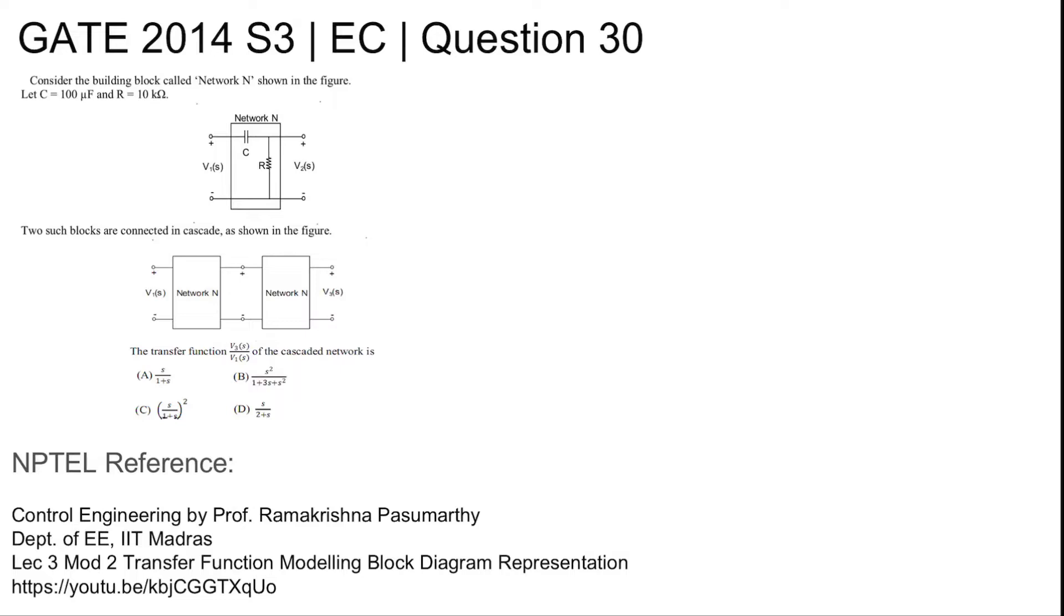GATE 2014 Set 3 EC Question Number 30. Consider the block called Network N shown in the figure, where C is 100 microfarad and R is 10 kilohm. Two such blocks are connected in cascaded fashion. The overall transfer function of the cascaded system is being asked for.